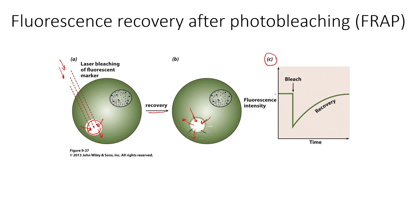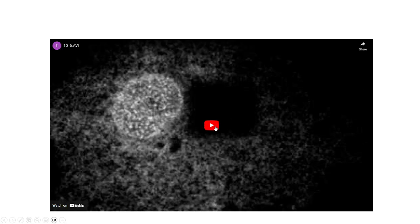We can see that in part C, using a graph looking at fluorescence intensity over time. We start with whatever high normal level of fluorescence intensity, then we come in with that laser that bleaches out that one specific area and the fluorescence intensity goes down. Then over time, we see that recovery where other green fluorescent marked proteins move in, and the bleached ones move out.